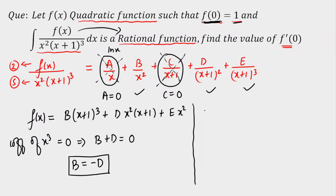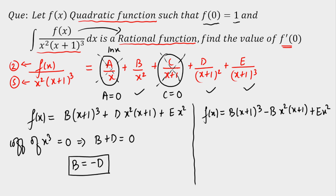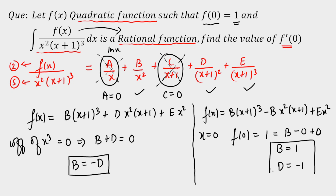Rewriting f(x) as b·(x+1)³ - b·x²·(x+1) + e·x², and using the initial condition f(0) = 1, substituting x = 0 gives b·1 = 1, so b = 1. Therefore d = -1. We now have b = 1 and d = -1.